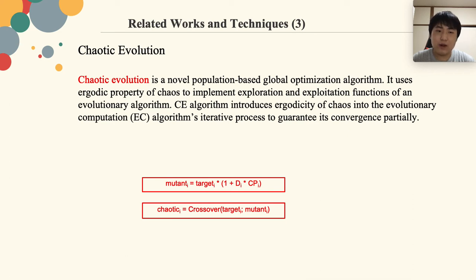These two functions are the main operations for generating the chaotic vectors. In chaotic evolution, after generating the direction vector d and chaotic parameters cp, the mutant vector is generated based on the target vector as in equation 1. We can then obtain the chaotic vector by crossing the target vector and the mutant vector according to a crossover rate, as in equation 2.